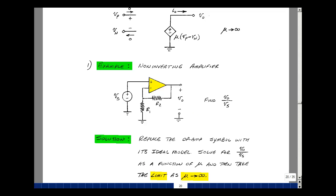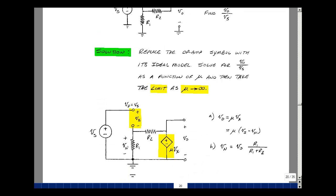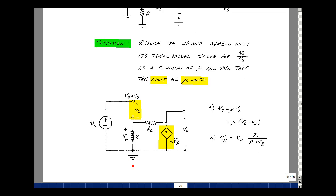One approach to analyzing this is to replace the op-amp symbol by this model that we have here at the top of the page. So between the plus and minus terminals, we have an open circuit, and from the output terminal back to ground, we've got a voltage-controlled voltage source. What we could do is analyze the circuit and take a limit as something approaches infinity.